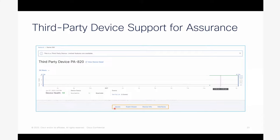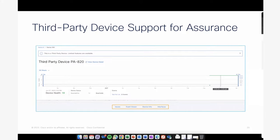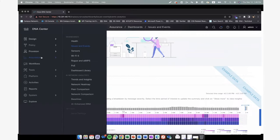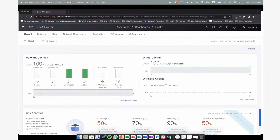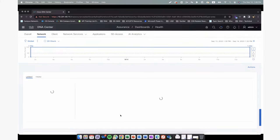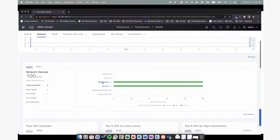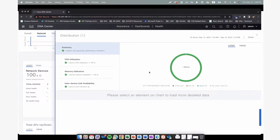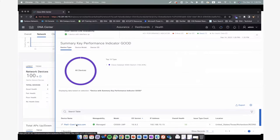I'll show you what the difference is between a supported and third-party device under Device 360 View. This is a Palo Alto Firewall device added to Catalyst Center. Under Device 360, the information available contains issues, event viewer, device info, and interfaces. For a fully supported device, you will be able to see additional categories — including physical neighbor topology, application experience, and more. Even with this limited view, it's a significant improvement in being able to get visibility of third-party devices in Catalyst Center.